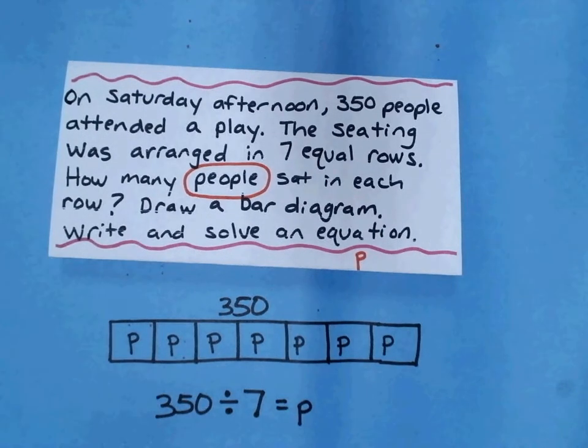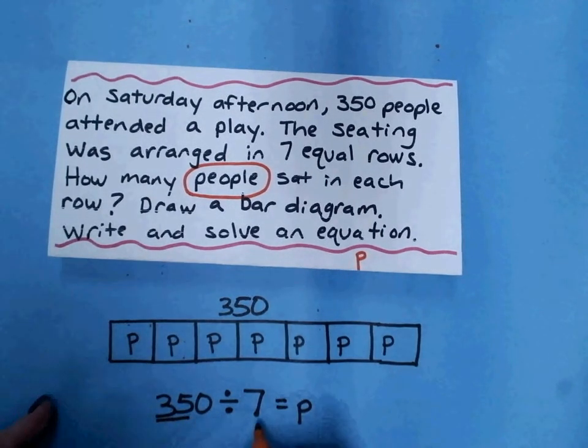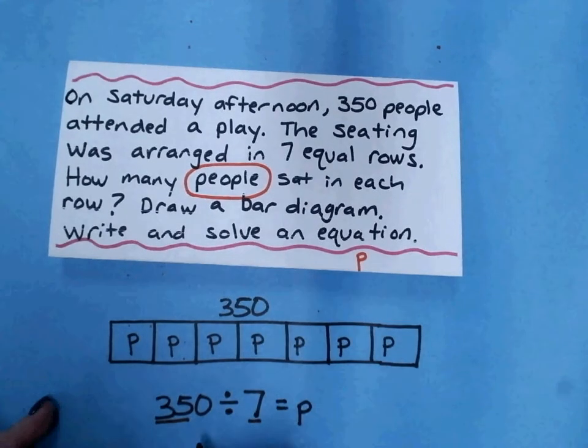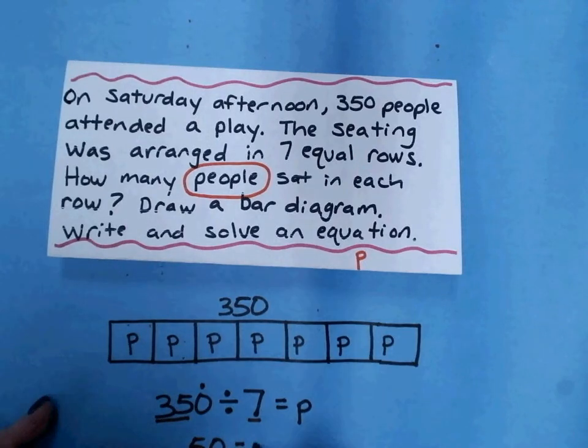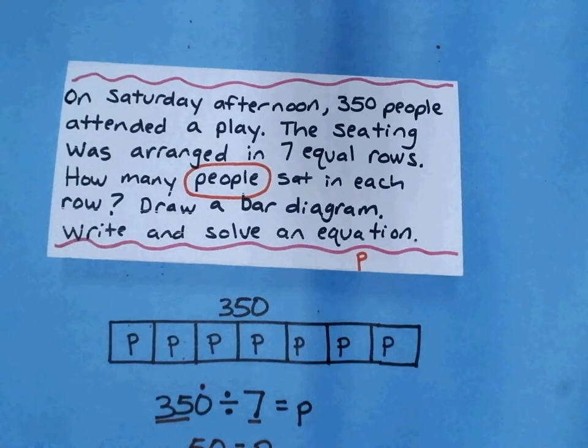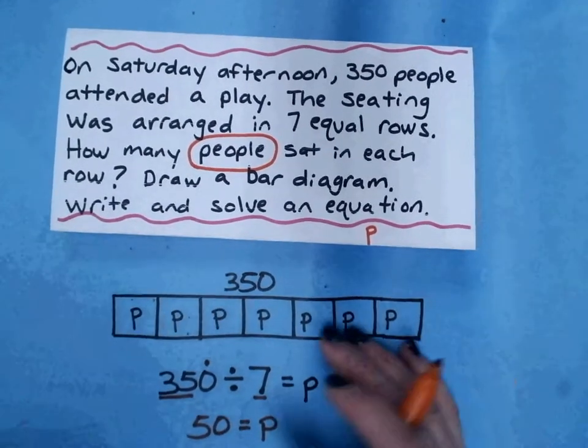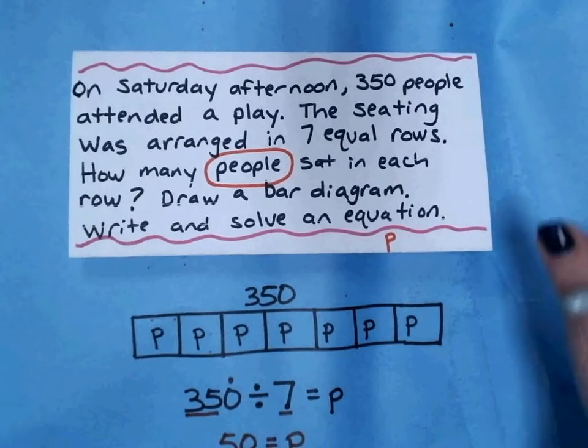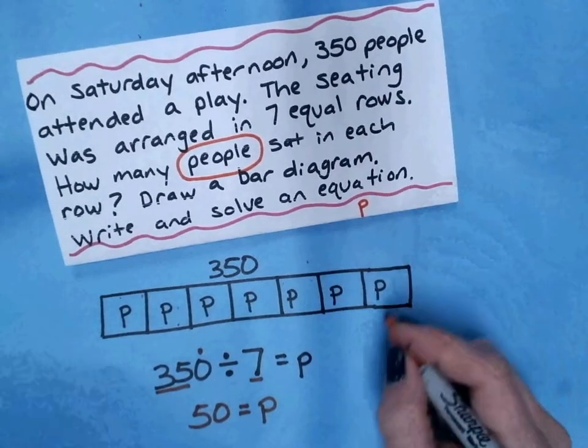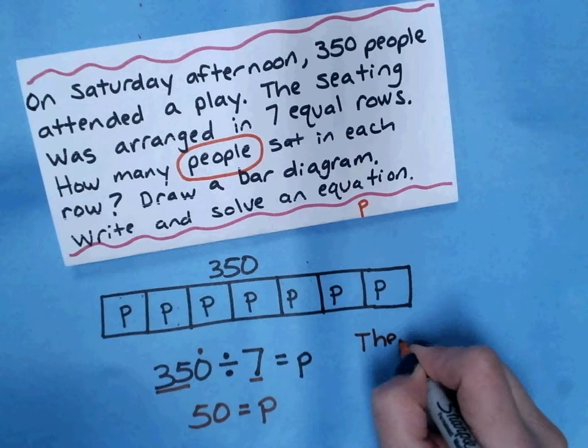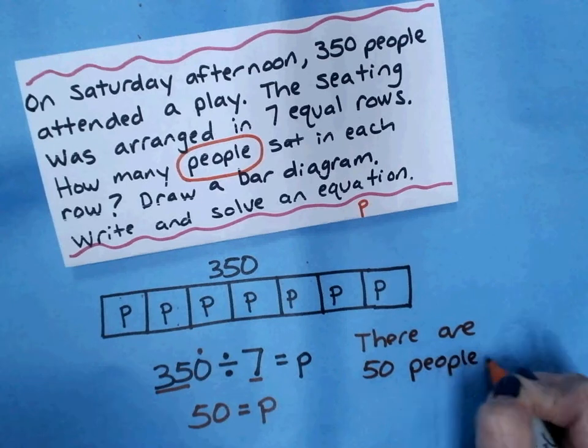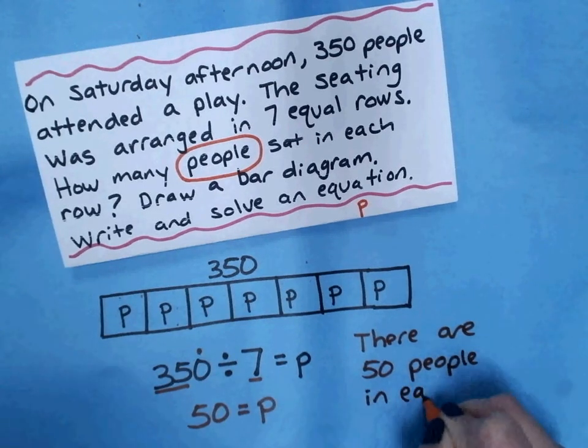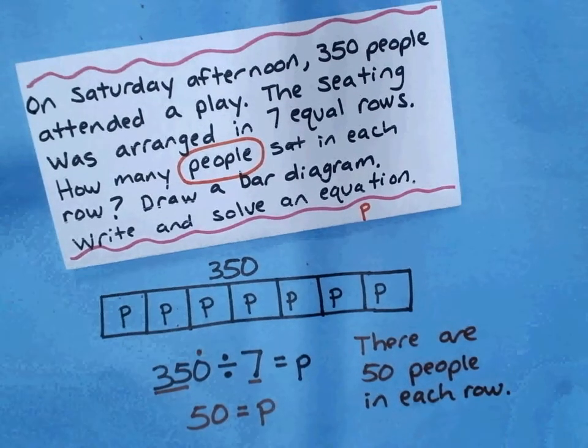My problem would be 350 divided into 7 equal rows would equal P, the number of people. My basic fact here is 35 divided by 7, which is 5 plus my 0. My equation, so I solved for the number of people P equals 50. That would mean there are 50 people in each row.